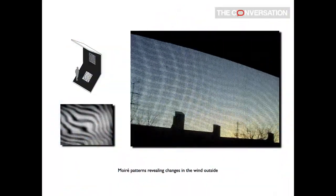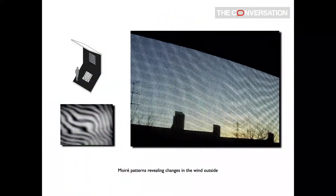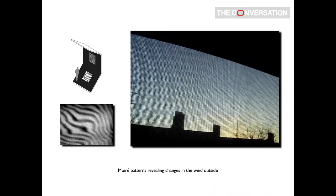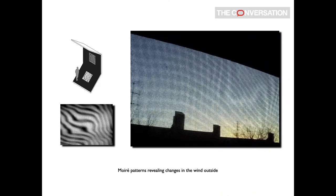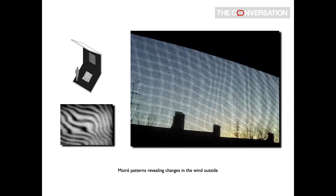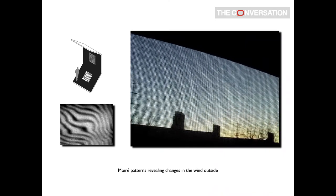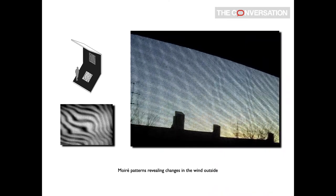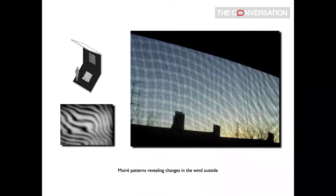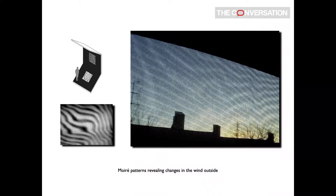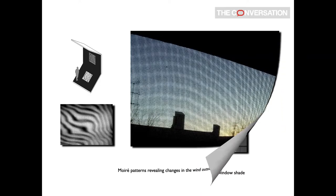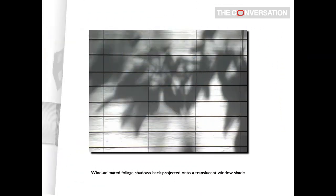Placing an inset screen and a net curtain in an existing window, for example, will generate moiré patterns that change as the wind outside varies. This works even on overcast days, but in direct sun, the moiré patterns are also cast as moving shadows on indoor surfaces.